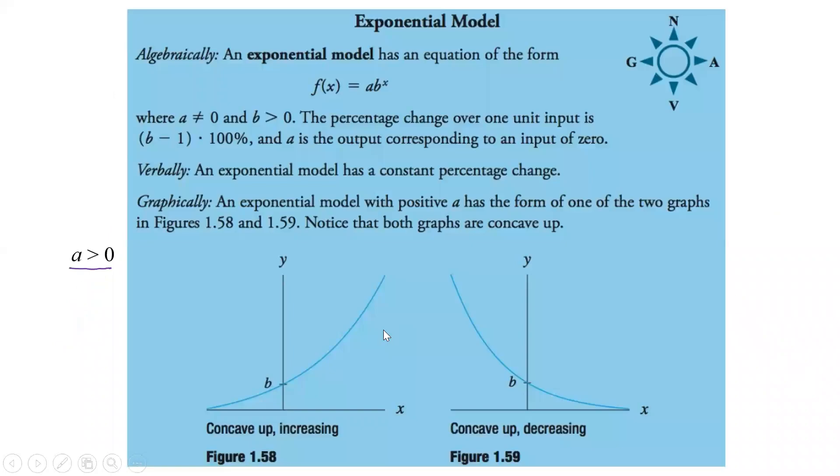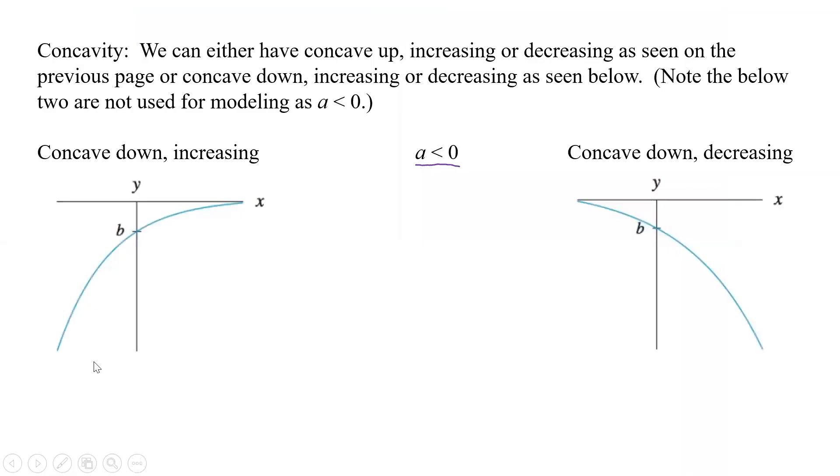When it's increasing, concave up, we're heading to infinity as we get larger and larger values of x. And here, as we head to larger values of x, the y goes to 0, or the output goes to 0. Now, here, the opposite. As we're increasing here and our x goes to positive infinity, our y goes to 0. And here, as concave down decreasing, as x increases to infinity, y decreases to infinity. So kind of some differences there, and we'll be using those to solve some limits here in a little while.